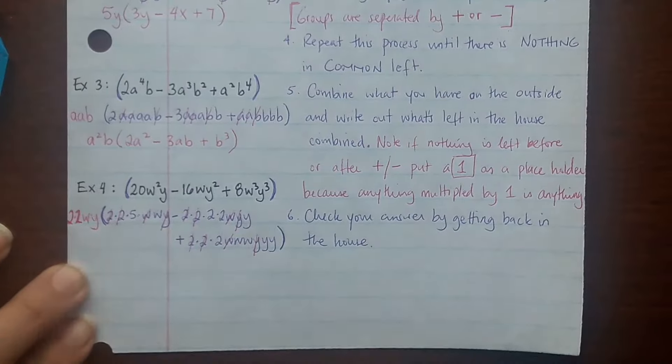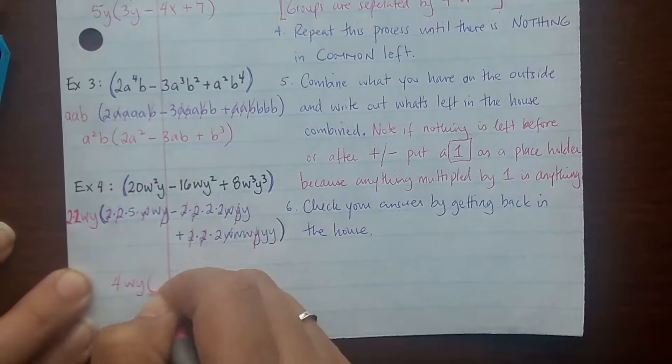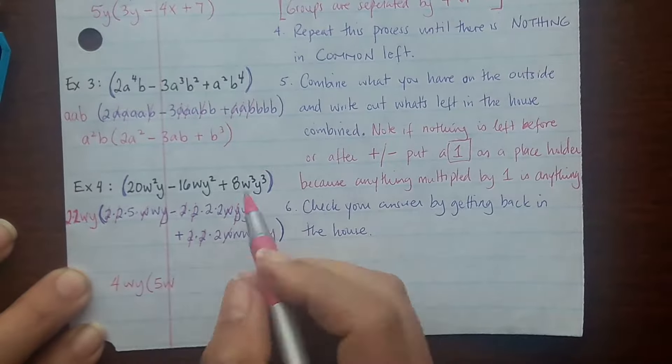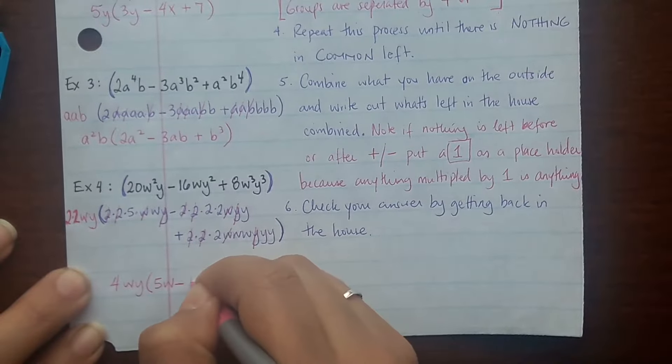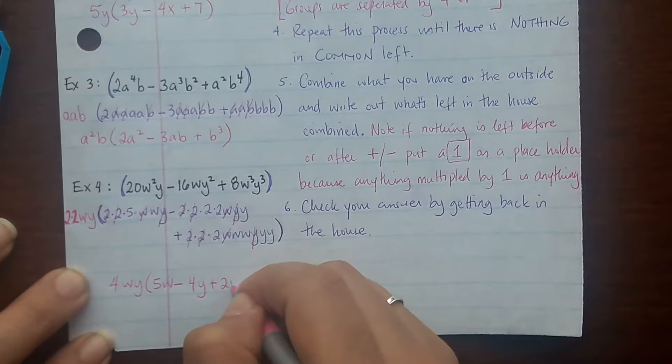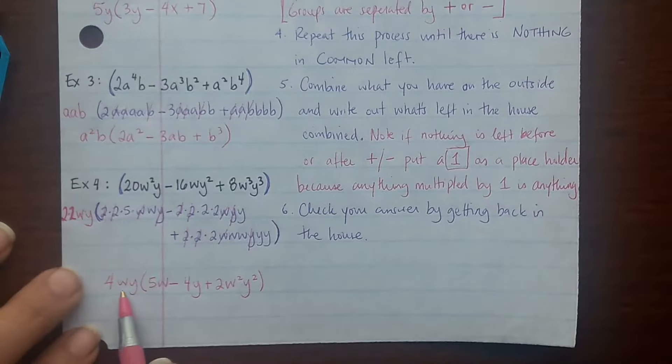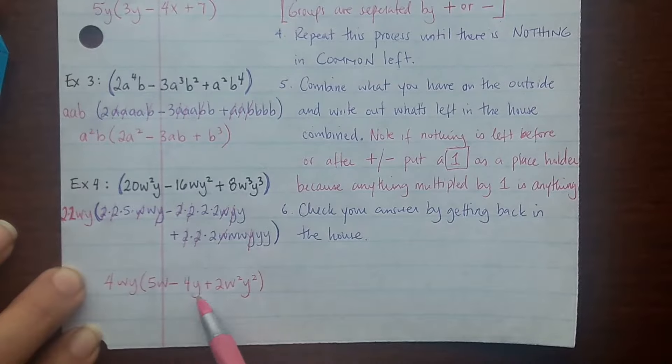So combine the outside. So I've got 2 times 2 which is 4. I've got 1 y and 1 w. And then inside I've got 5w minus 2 times 2 is 4, and a y. Plus a 2, 2 w's and 2 y's. And that's pretty much it. So you check your answer. 4 times 5 is 20, and the whole way around basically. You get the exact same thing back, then you're okay.